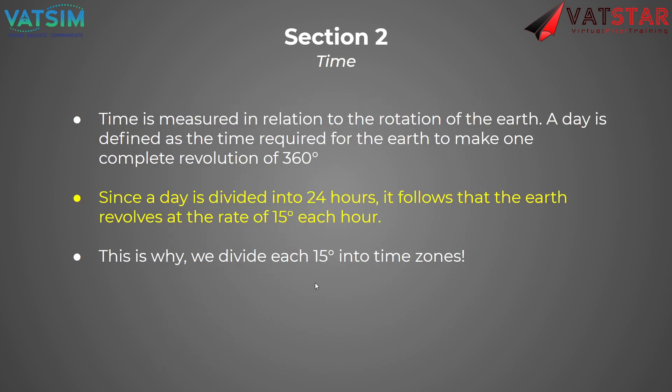Time is measured in relation to the rotation of the Earth. A day is defined as the time required for the Earth to make one complete revolution — officially 23 hours, 56 minutes, and four seconds. We round that into 24 hours, and that's why we have a leap year every once in a while, to account for that extra day since a day isn't exactly 24 hours. It follows that the Earth revolves at a rate of 15 degrees every hour, which is why each time zone is 15 degrees — 360 degrees divided by 24 hours equals 15 degrees per time zone.